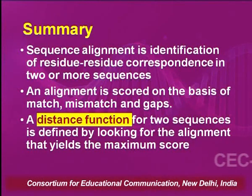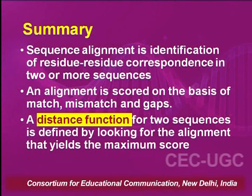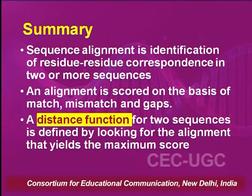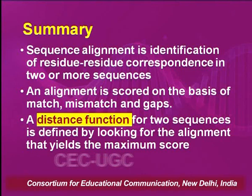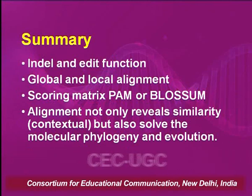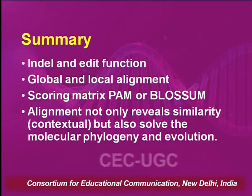Before I go further, let us have a quick summary of what we talked about in the previous section. We talked about what sequence alignment is — it is a residue-by-residue correspondence in two or more sequences — and we give a score to every alignment based on matches, mismatches and gaps. We defined a distance function for any alignment with indel functions, and we used different scoring matrices: PAM and BLOSUM.